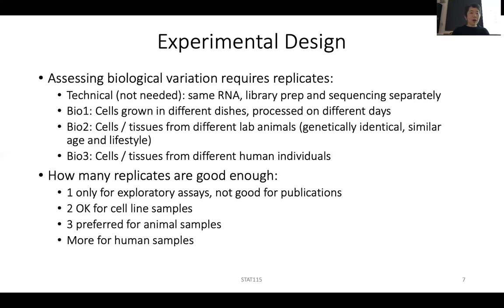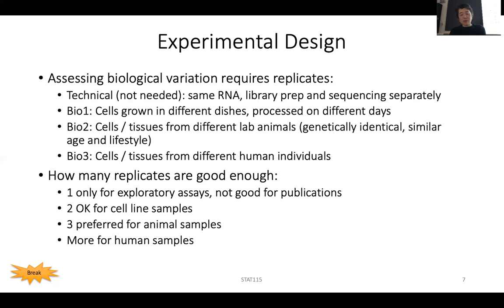Replicates are definitely important, and it's important to have a good experimental design. For example, when generating replicates, make sure that in each replicate you have both a treatment and a control, processed together. Don't do the control one day and the treatment three days later — what you might see as a difference could actually be what we call a batch effect: differences due to reagents or handling on different days, not real biological signals.